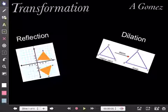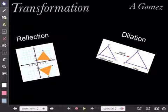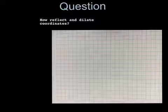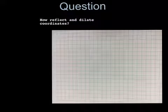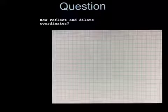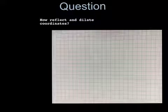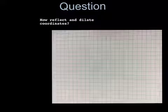This YouTube tutorial will teach you how to reflect and dilate coordinates. A dilation is an object that either gets bigger or smaller than the original object. A reflection is basically a flip.